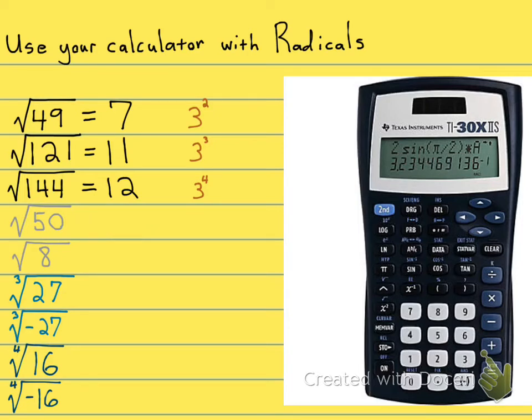But sometimes they're going to tell you to use your calculator to approximate. And when they ask you to approximate, the symbol, it's not going to be equals because it's not going to be exact. It's going to look like this, like an equal sign with wavy lines. So this is the approximation symbol.